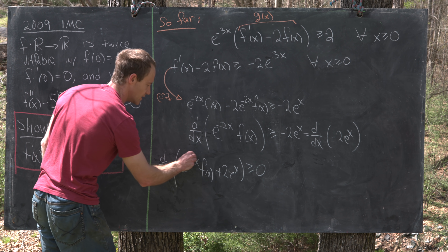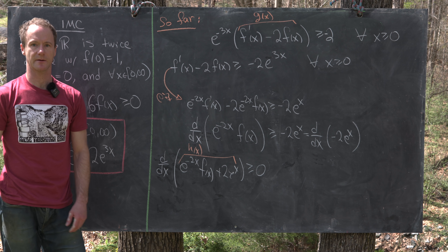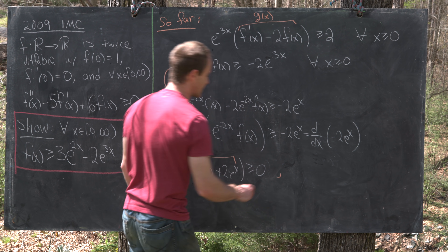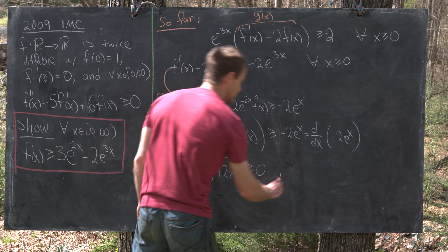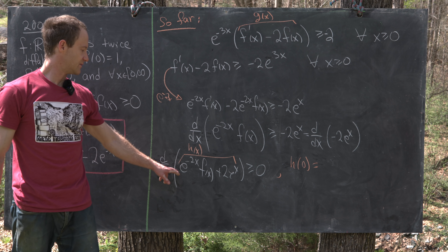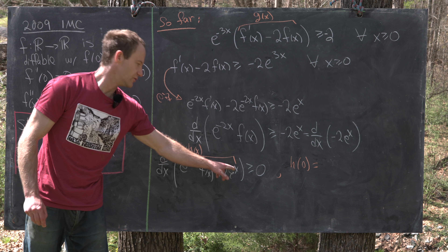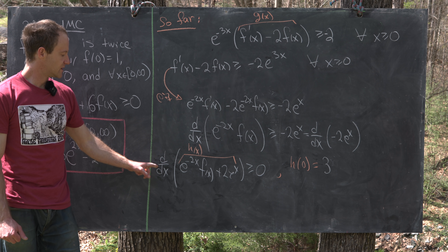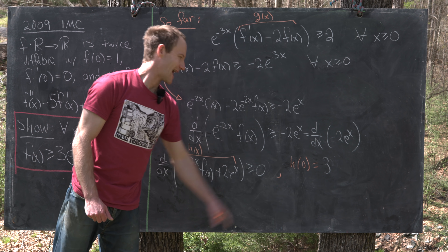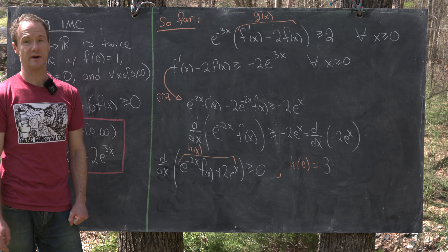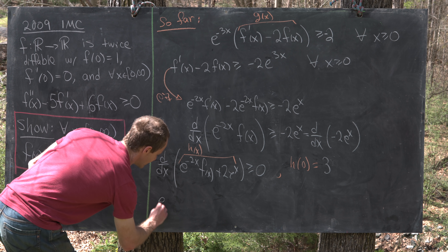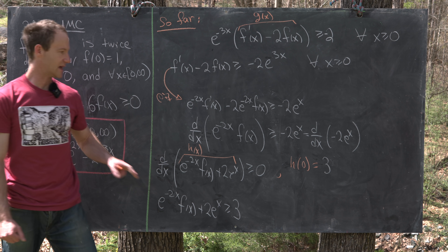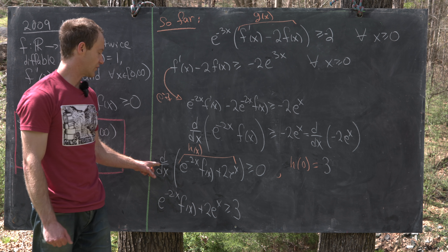Call h(x) = e^{−2x}f(x) + 2e^{x}. We have h'(x) ≥ 0, and the initial condition h(0) = f(0)·1 + 2·1 = 1 + 2 = 3. Since h is increasing from h(0) = 3, we conclude h(x) ≥ 3, i.e., e^{−2x}f(x) + 2e^{x} ≥ 3 for all x ≥ 0.